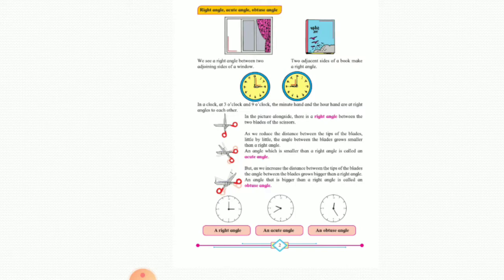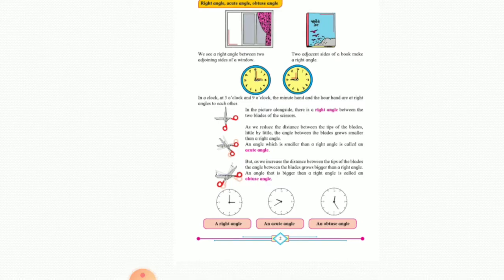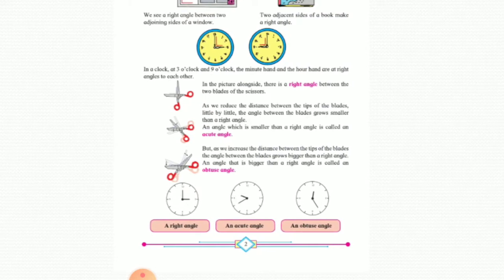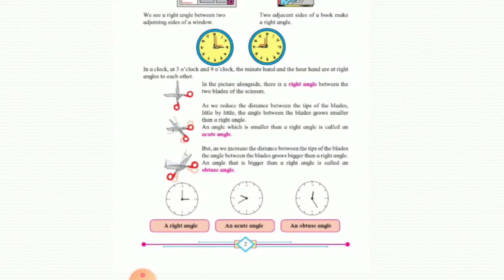Now let us concentrate on these three pictures of the clock. What is the angle shown in the first clock? Yes, it is a right angle. The second clock shows an acute angle and the third clock shows an obtuse angle.